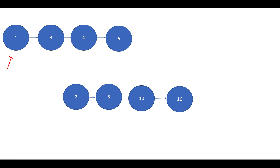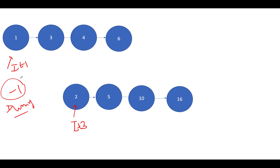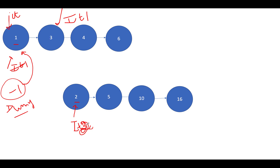To merge two sorted linked lists, we create three pointers: IT1 for iterating over the first list, IT2 for iterating over the second list, and a dummy pointer to store the head of the final merged list. We compare IT1 and IT2 — IT1 has a lower value (1), so dummy.next points to IT1. We increment IT1 to the next position. IT now points here, IT1 points to 3, and IT2 is still at 2.